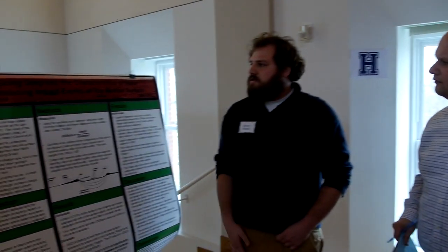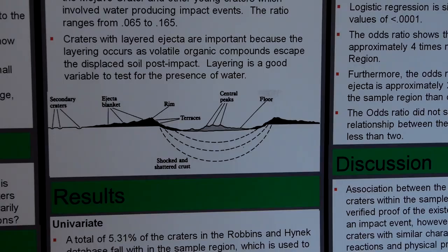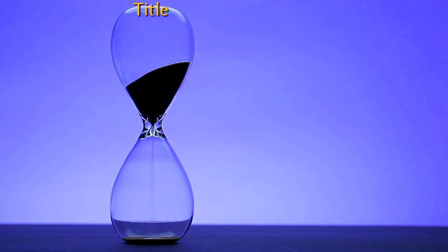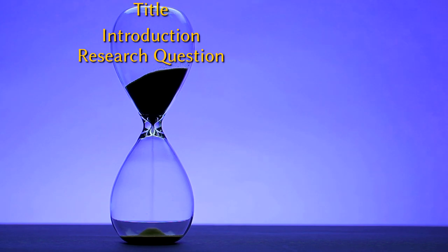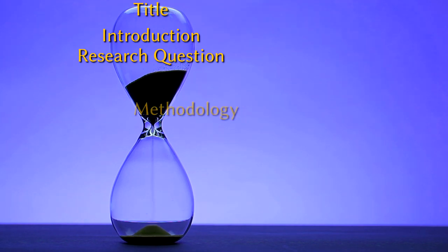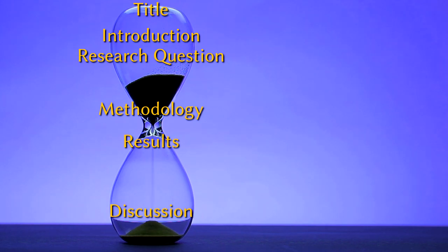When writing about empirical research for a presentation or poster, there are generally six sections: Title, Introduction, Research Question — which can be included at the end of the introduction — Methodology, Results, and Discussion. These six sections will help you organize your thoughts in writing.